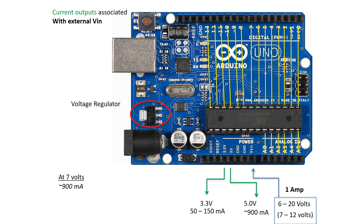Note that these power inputs also power our GPIO pins. Remember that these are designed to source about 20 milliamps per pin with a peak of 40 milliamps for short periods of time. However, the microcontroller that channels power to these pins can only handle a maximum of 200 milliamps total for all your pins. As such, you don't want to draw 20 milliamps from all your GPIO pins at the same time, or you risk damaging your chip.